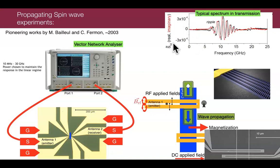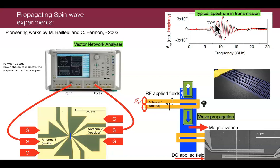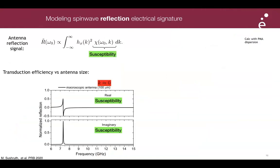This is implemented on samples with multiple antennas, yielding a transmission spectrum showing the coefficient between antenna two and antenna one versus frequency. Below a given frequency, there is no signal because we are in the spin wave gap where no spin waves exist. When the frequency is high enough, we enter the spin wave band and get a transmission signal with a real part and an oscillating part related to the phase acquired by the spin waves upon propagation.